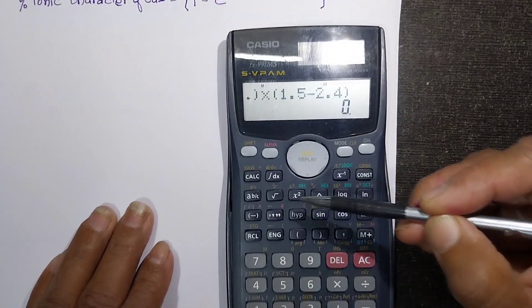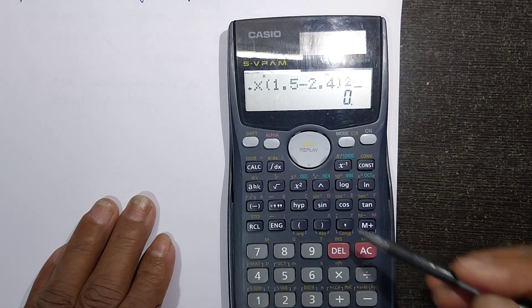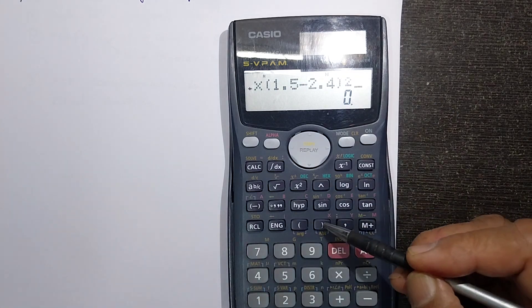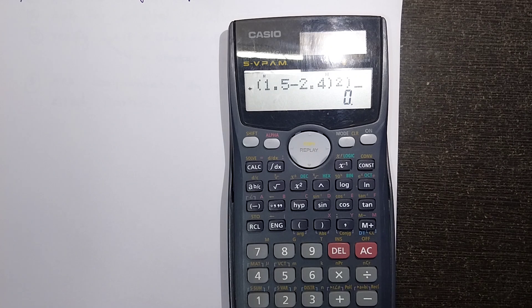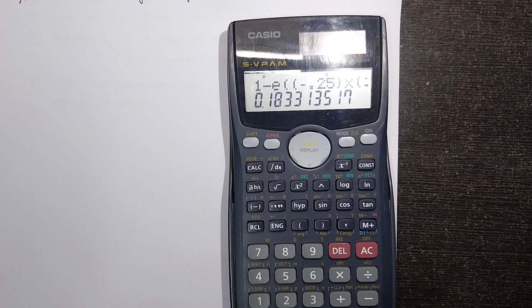That square value is available as x raise to 2. This is squared as you can see and then since we open two brackets we close this bracket twice and then press equal to sign that gives you 0.1833.